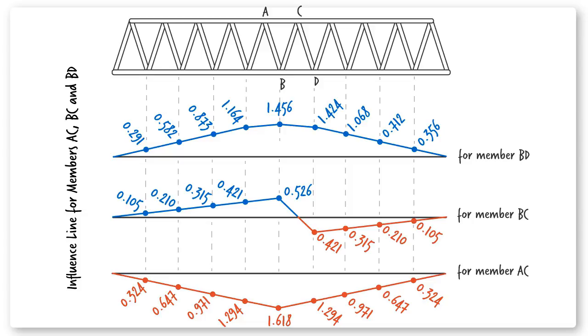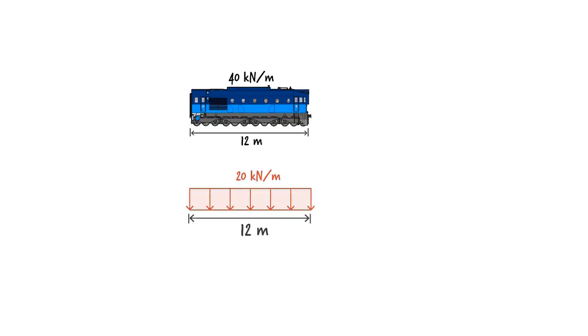Here are the three influence lines. We are now ready to determine the maximum effects of the distributed train load on each member. Suppose the bridge is expected to carry train cars with maximum load of 40 kN per meter, and the smallest car would have a length of 12 meters. Given that each of the two side trusses carries half of the total load, then our uniformly distributed load for each truss is going to be 20 kN per meter. The length of the load could vary from 12 meters to 55 meters, which is the total length of the bridge.